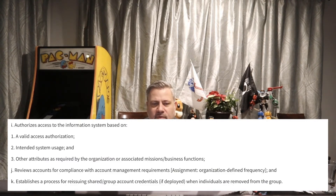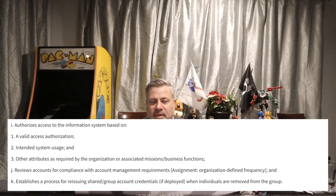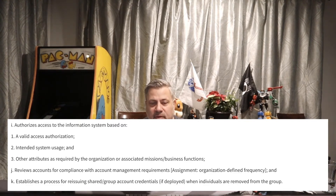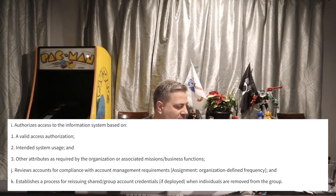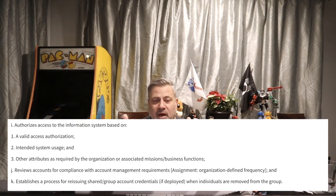Part I: authorizes access to the information system based on valid access authorization. Someone has to approve it — they need a valid reason to use that account on that system. Intended system usage must be established, and any other attributes required by the organization or associated mission and business functions. Access is authorized based on valid approval, a demonstrated need to use the system, and anything else the organization defines.